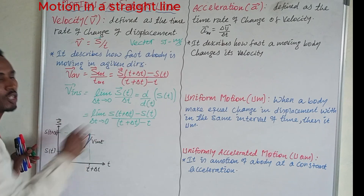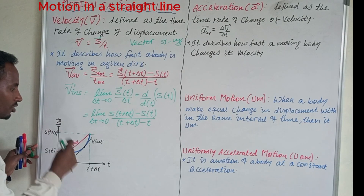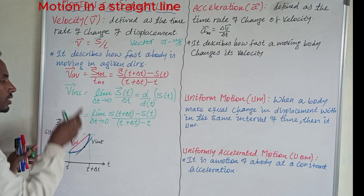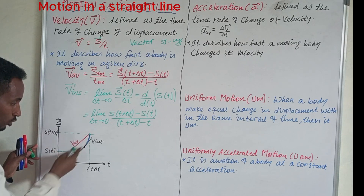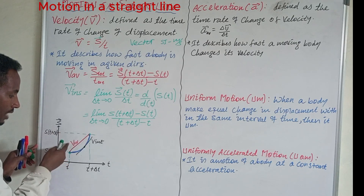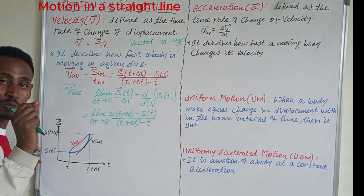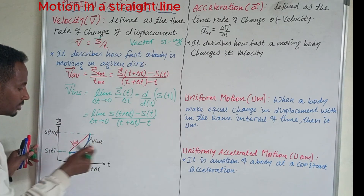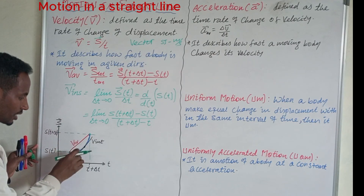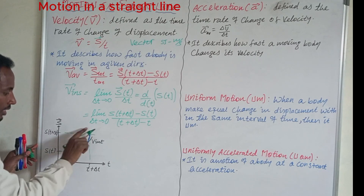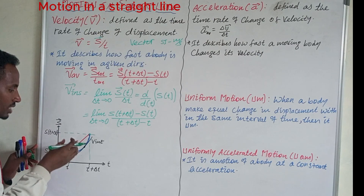The total distance and the change of position are the same. The average velocity is represented in this example. If you look at the graph, you can see the slope. The slope of the graph at a given point, at a particular point — if you look at the derivative or the rate of change, you can see the average velocity.